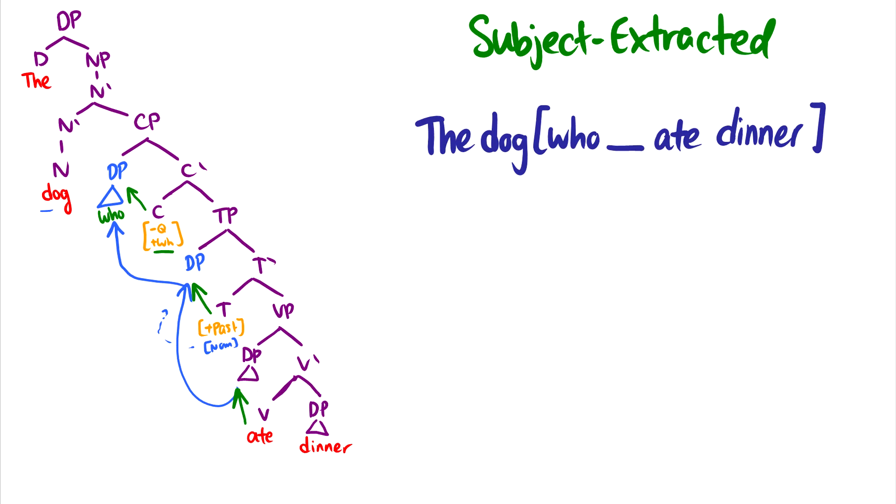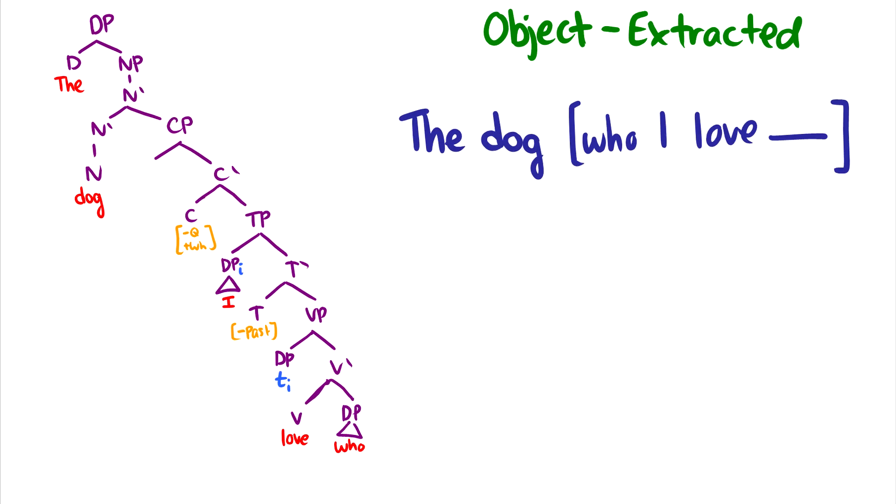The object-extracted relative clause works very similarly. In which case the dog I love who. And who gets accusative case from love. And then of course our C head minus Q plus WH is pulling for a WH word, and it just takes who and moves it all the way up into spec CP. So now we have the dog who I love.